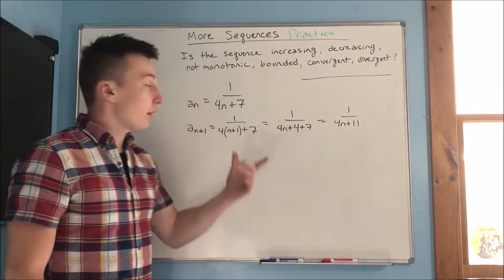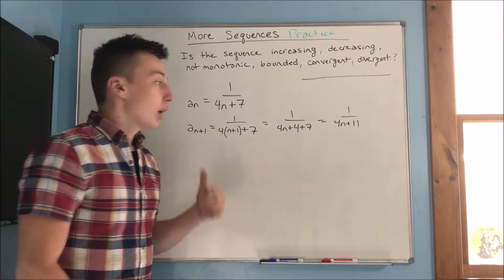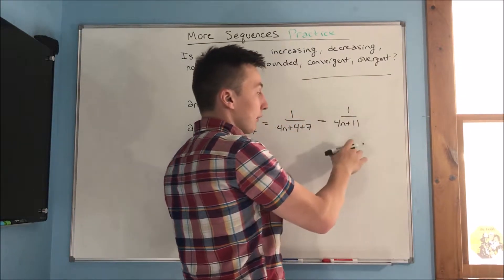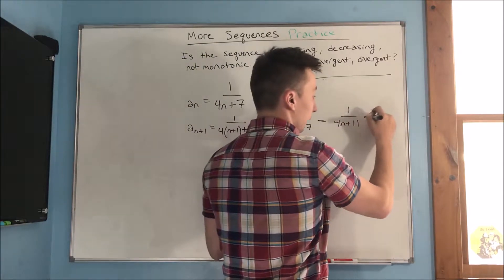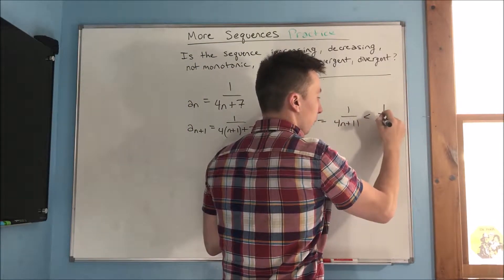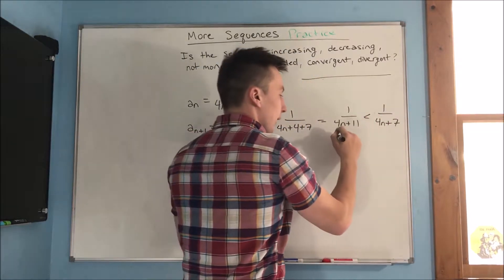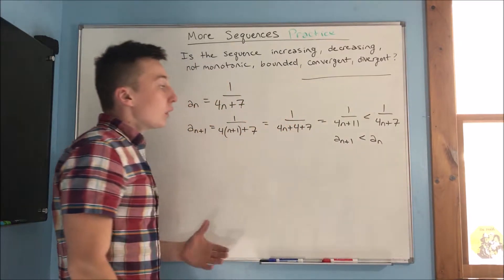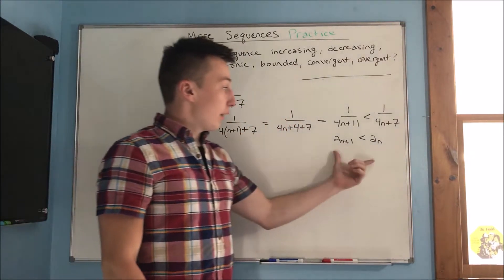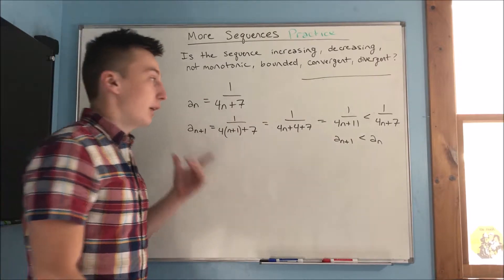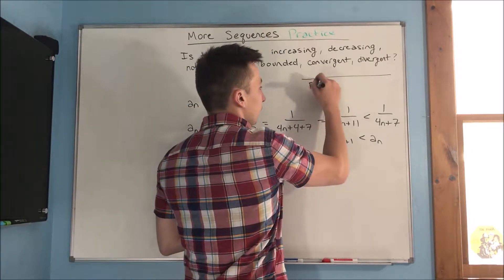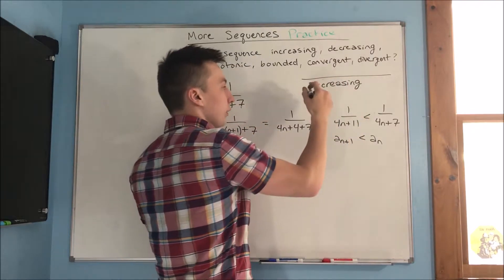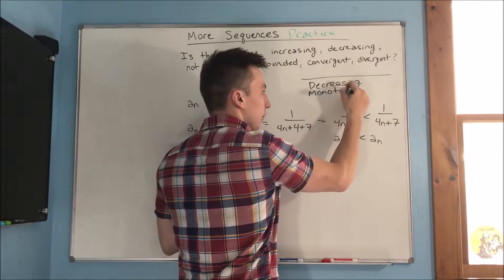Now, one over four n plus eleven — the denominator four n plus eleven is greater than the denominator four n plus seven. Since the denominator is larger, the whole fraction is smaller, so one over four n plus eleven is less than one over four n plus seven. That tells us that a sub n plus one is less than a sub n, which means this sequence is decreasing.